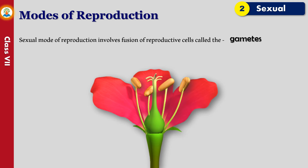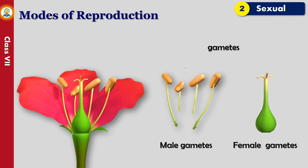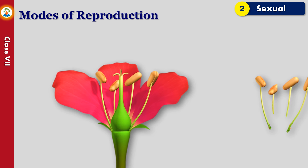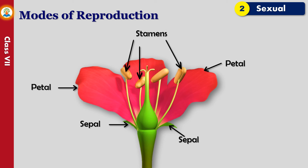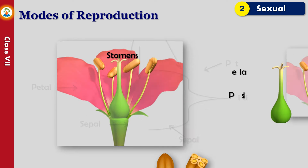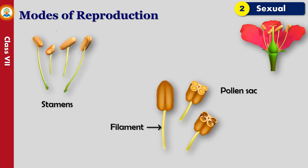The gametes are of two types: male gametes and female gametes. They are produced in special structures present inside the flower of a plant. The outermost whorl is of sepals, which are green in color. The second whorl is of the male sex organs called stamens, and the innermost whorl has the female sex organ called pistil. The stamen consists of a filament and an anther; the anther has lobes which contain minute pollen grains.